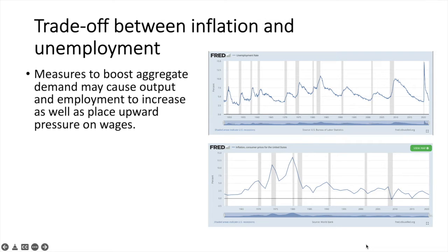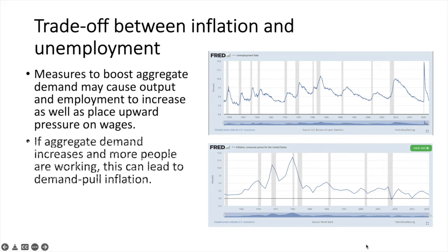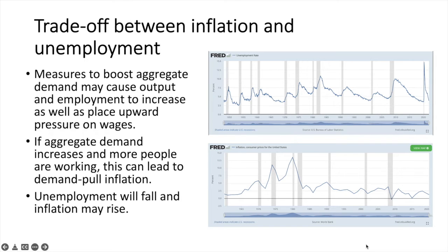The trade-off between unemployment and inflation comes from the fact that measures to boost aggregate demand may cause output and employment to increase, as well as place upward pressure on wages and resource prices. If aggregate demand increases and more people are working, this can lead to demand-pull inflation. Overall, unemployment will fall and inflation may rise.